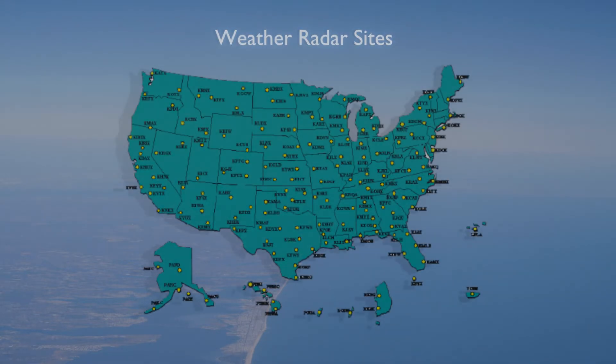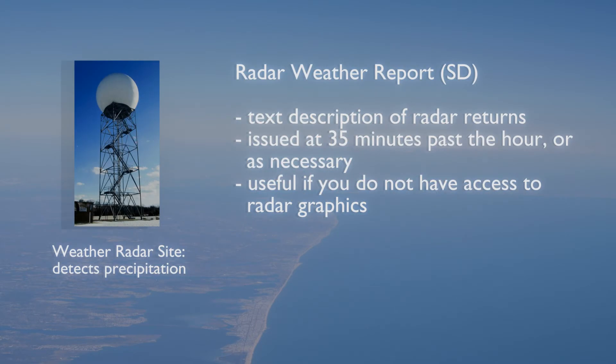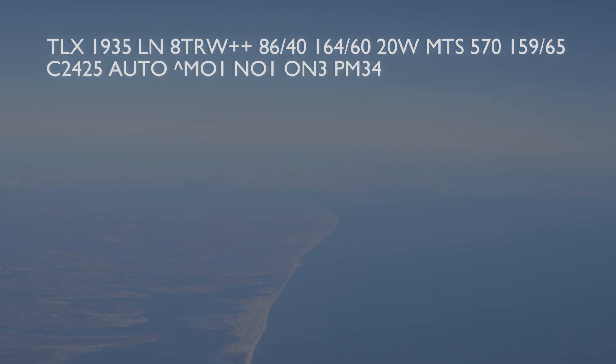A nationwide weather radar network is used to detect precipitation throughout the country. A radar weather report, referred to as an SD, is a textual description of radar returns issued at 35 minutes past each hour, with special reports issued when necessary. A graphical depiction of radar should provide more detail, but textual radar reports provide this information to pilots who do not have access to a graphical radar summary. Here is an example of a radar weather report.